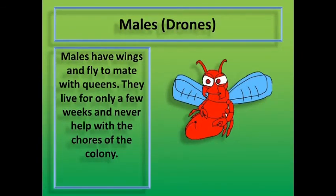Males, also called drones, have wings and fly to mate with queens. They live for only a few weeks and never help with the chores of the colony.